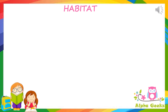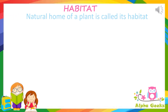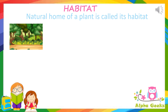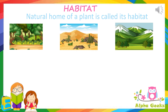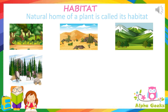Habitat. The natural home of a plant is called its habitat. Each habitat has its own characteristics — some places are warm, some are hot, some are cold, and some are very cold.